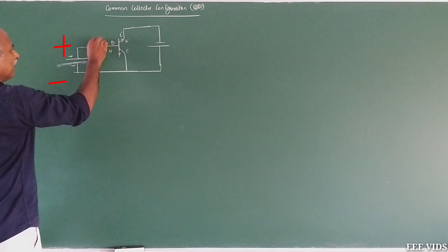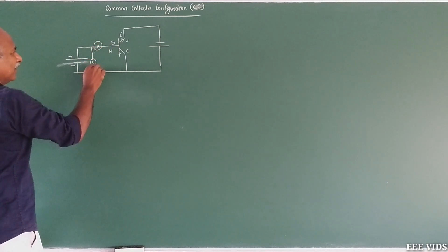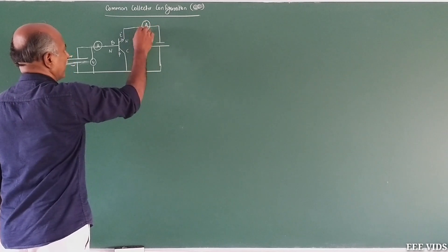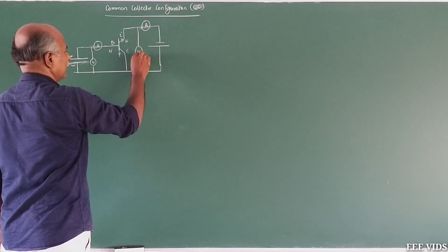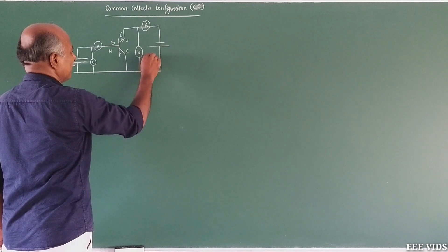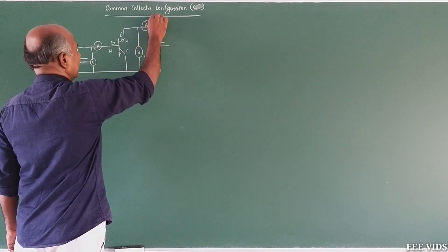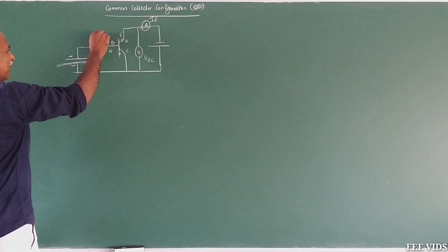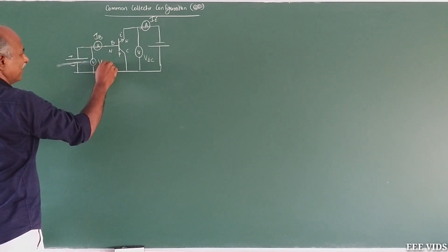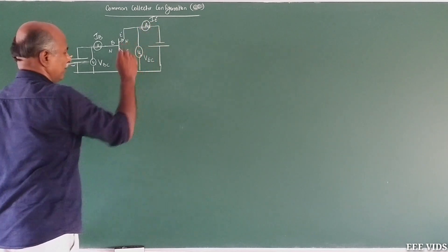Here is the emitter, and there is a voltmeter connected. The voltmeter measures VEC. The circuit has IE, IB, and VBC as parameters. We also have V1, I1, A2, and V2 in the circuit.